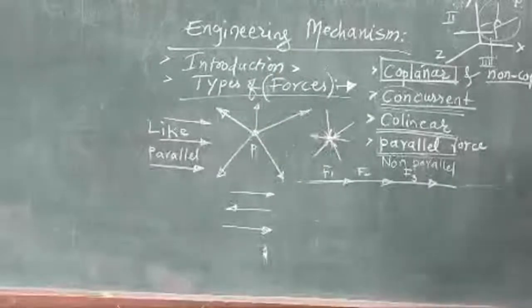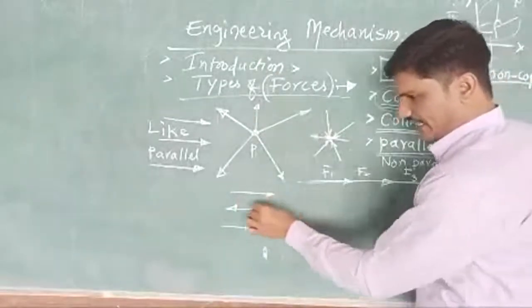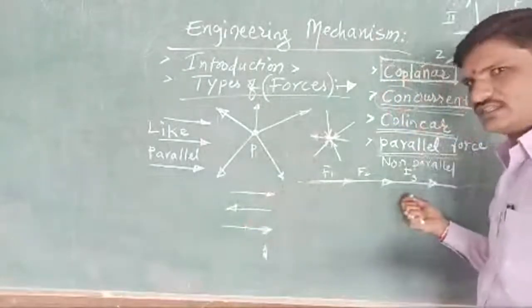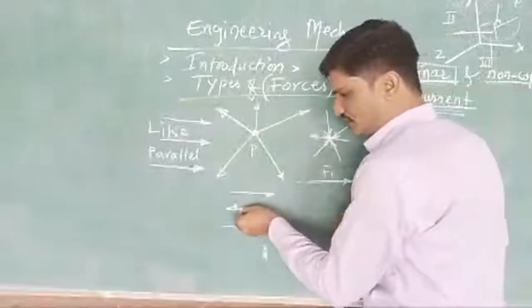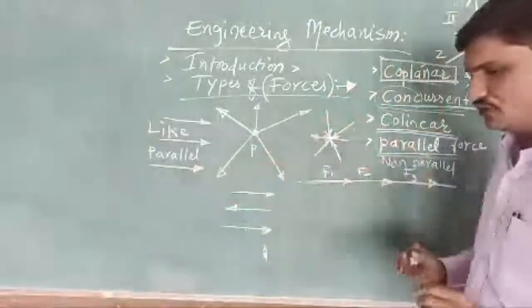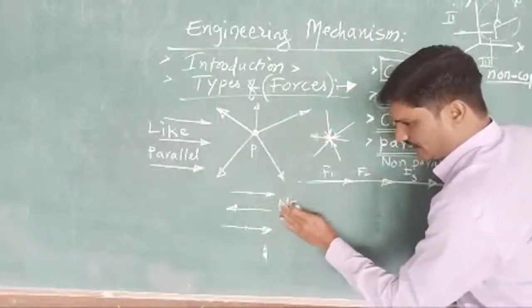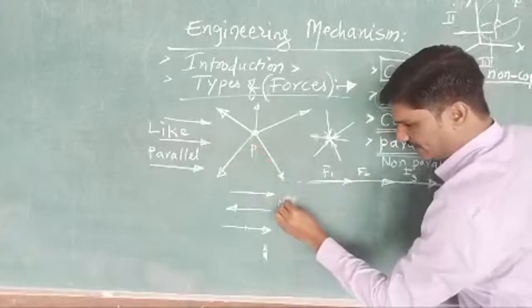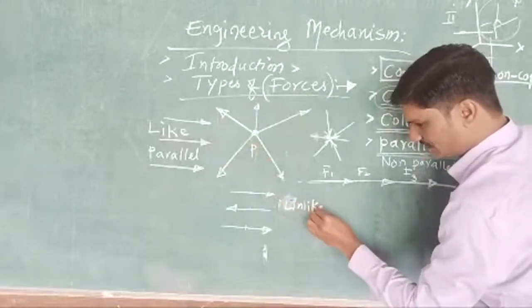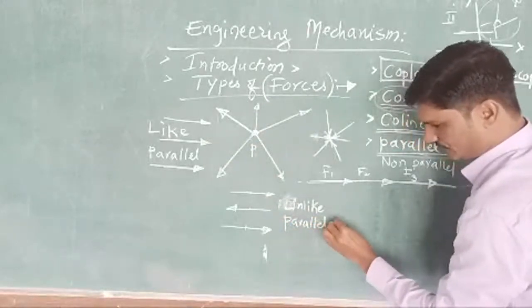Now you can see — all these forces are parallel, but the direction is different. One force is moving towards the right side, another force is moving towards the left side. When any one force follows the opposite direction, then we say this is unlike parallel.